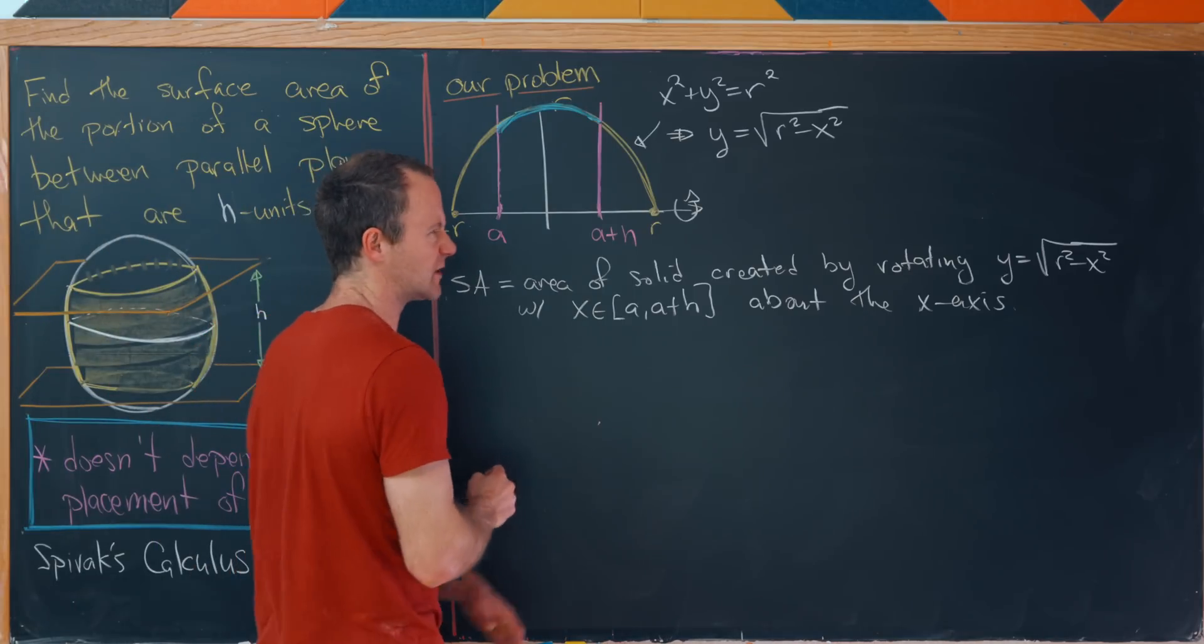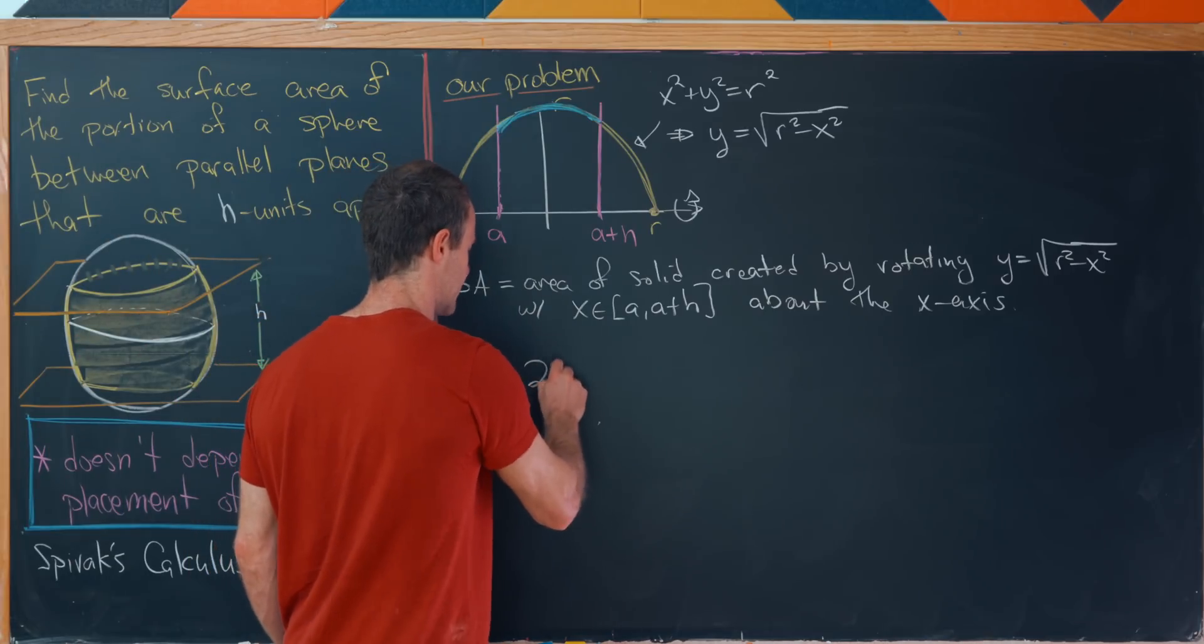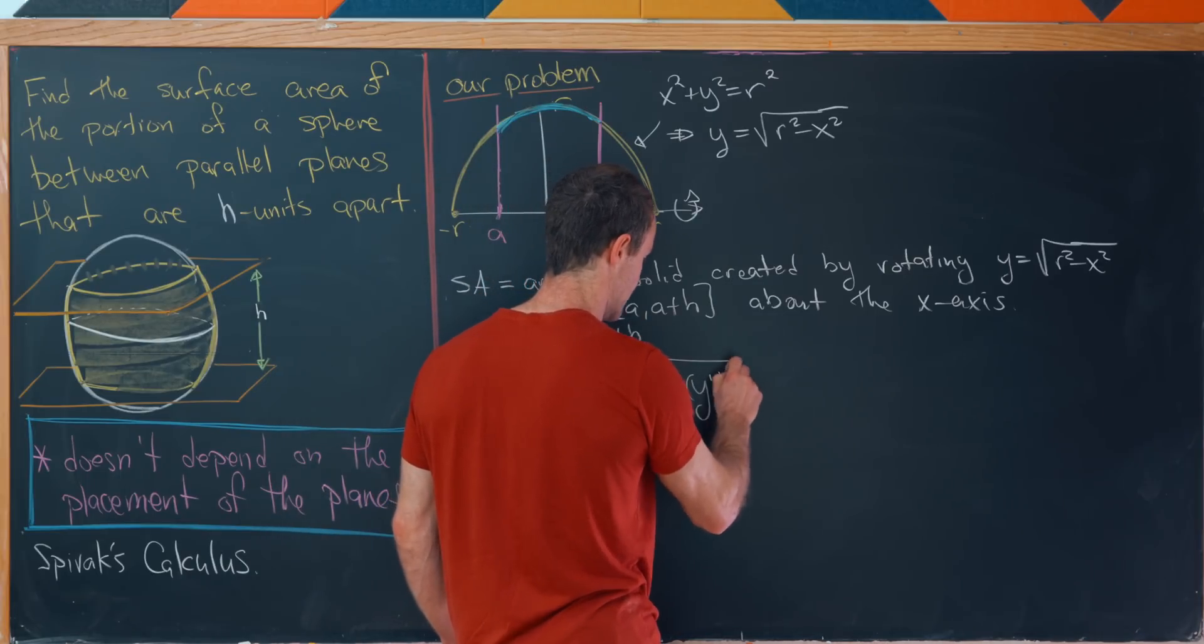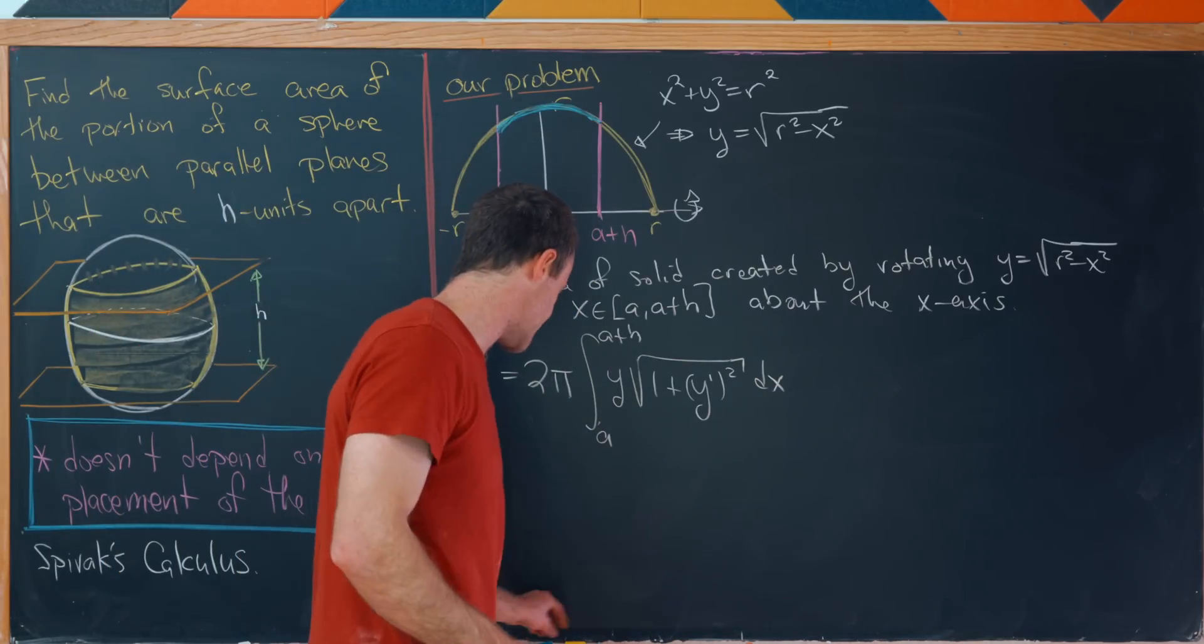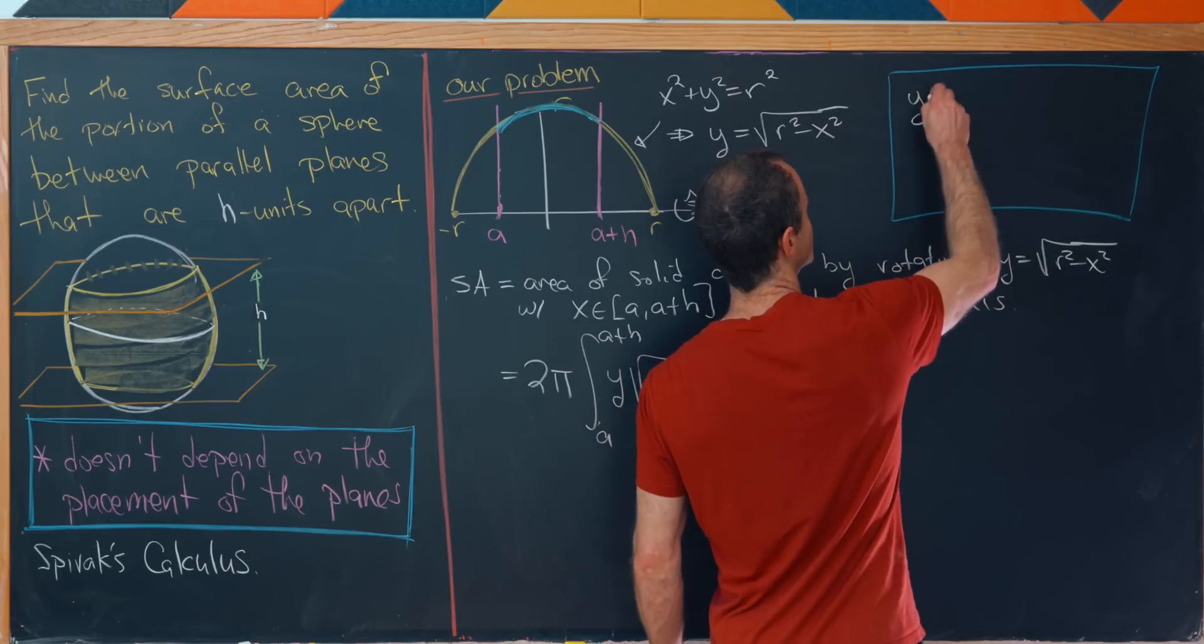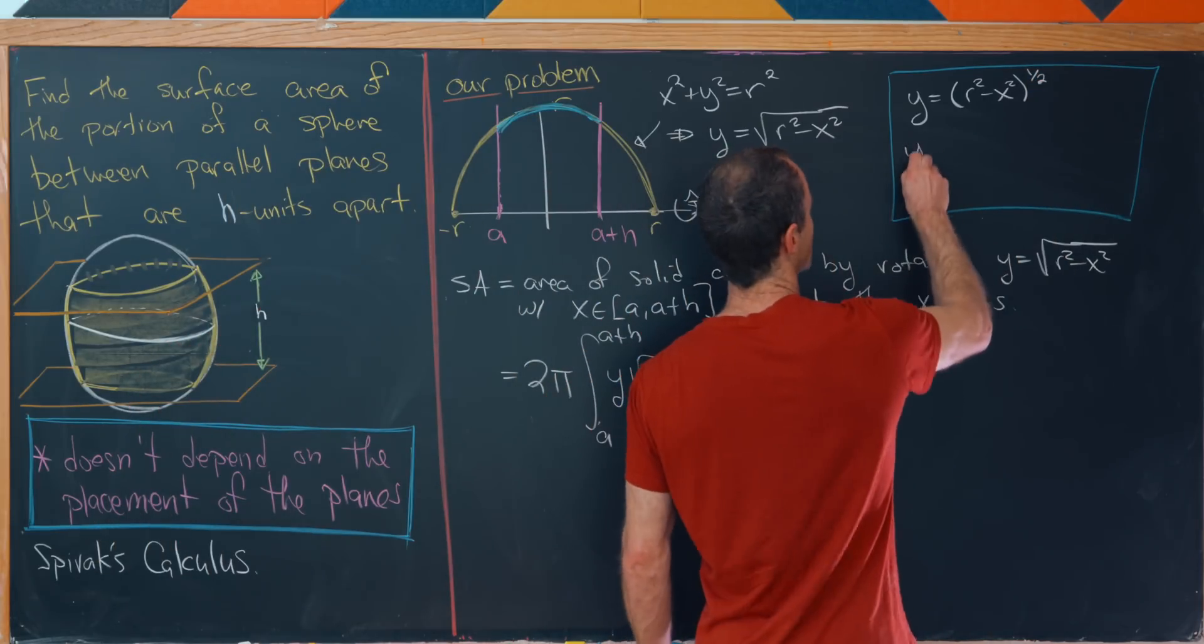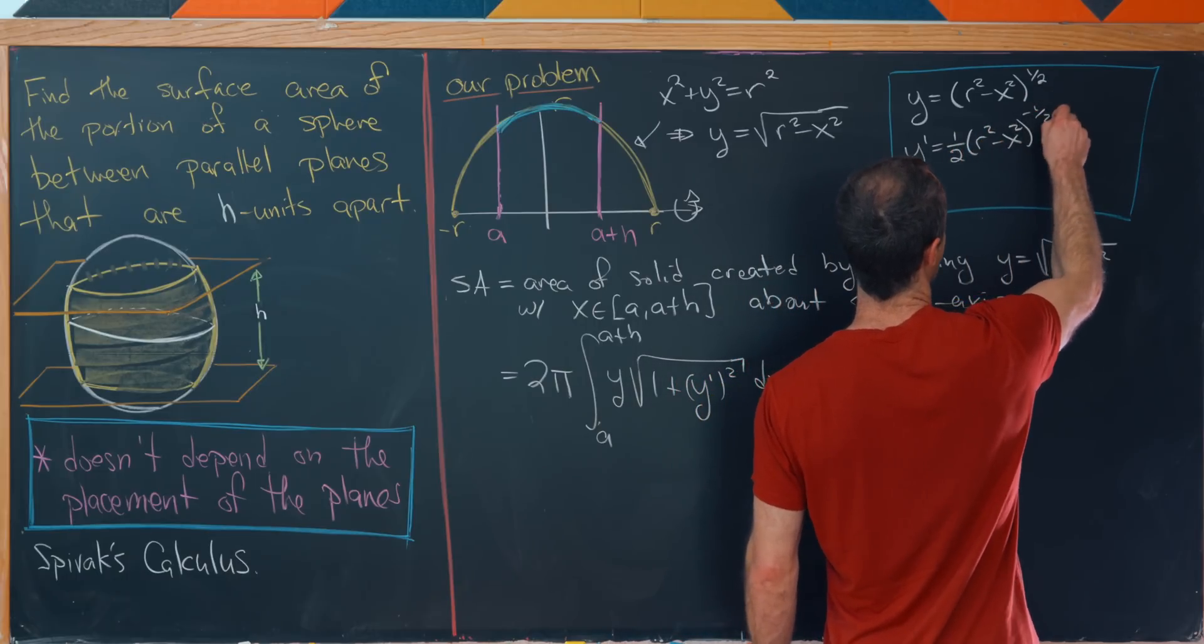But we've got a formula for that. If we were to replace what we had on the board before, the f of x with y's, that would give us something like this. So we have 2 times pi times the integral from a to a plus h of y times the square root of 1 plus y prime squared dx. Let's maybe above here, just so that it's off to the side a little bit, calculate y prime. So notice y could be written as r squared minus x squared to the half power. Maybe that would help us take the derivative more easily.